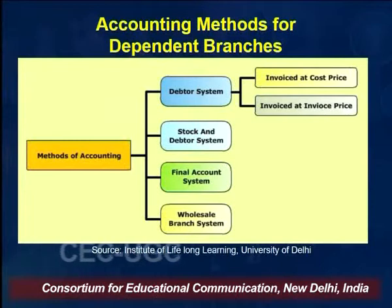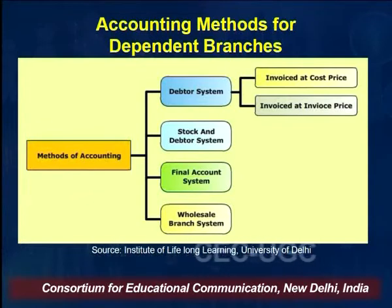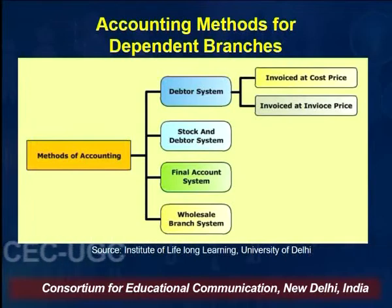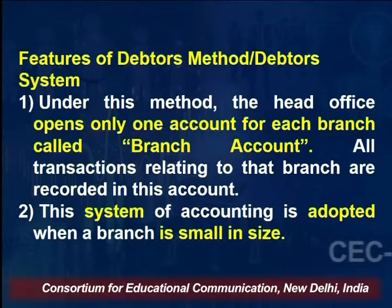The accounting arrangements for a dependent branch depend upon its size, type of activities, method of operation, and the degree of control exercised by the head office. The accounting methods used for dependent branches are: (1) Debtors System, also known as Debtors Method or Direct Method; (2) Stock and Debtors Method; (3) Final Account System; and (4) Wholesale Branch System.